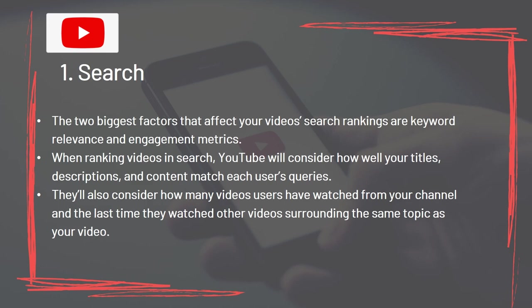Section 1: Search. The two biggest factors affecting your video search rankings are keyword relevance and engagement metrics. When ranking videos in search, YouTube considers how well your titles, descriptions, and content match each user's queries. They also consider how many videos users have watched from your channel and when they last watched videos on the same topic.